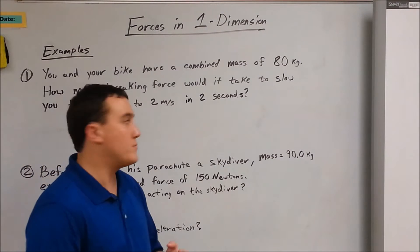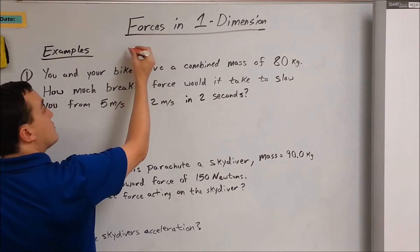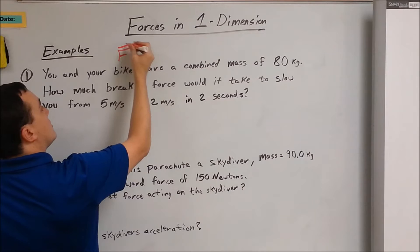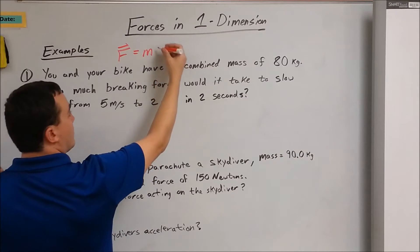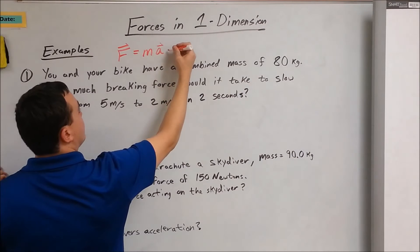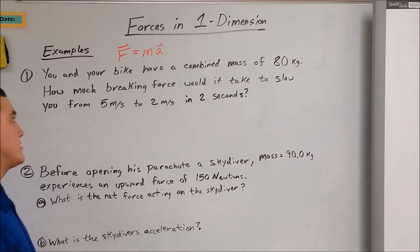All right, so let's take a look at some examples. The equation we're going to be using is F equals MA, that's Newton's second law. Force is a vector, mass is a scalar, and acceleration is a vector. A scalar times a vector gives us a vector, so that makes sense.